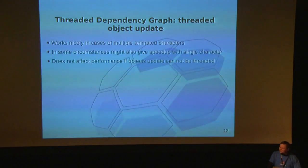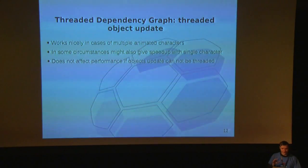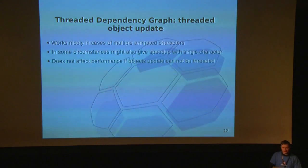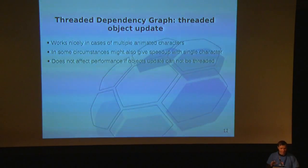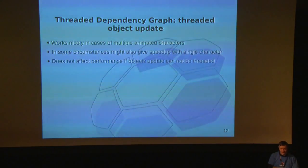It uses dynamic task scheduling, which balances load evenly across all threads. It works really nicely when you have multiple animated characters, but it may also help with a single character when you have a rig with heavy meshes parented to it. It does not affect performance if object evaluation cannot be multi-threaded — in that case, speed will be exactly the same as in current trunk, so there are no speed regressions at all.